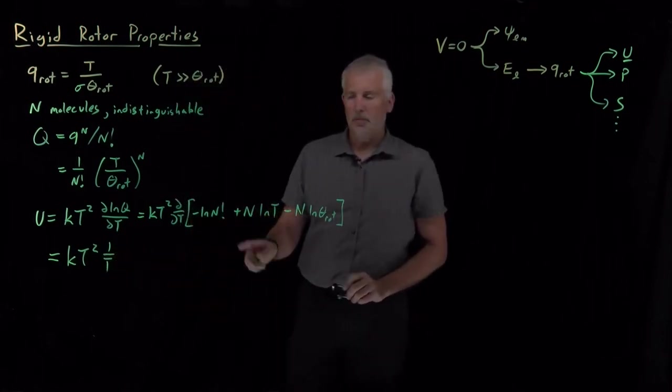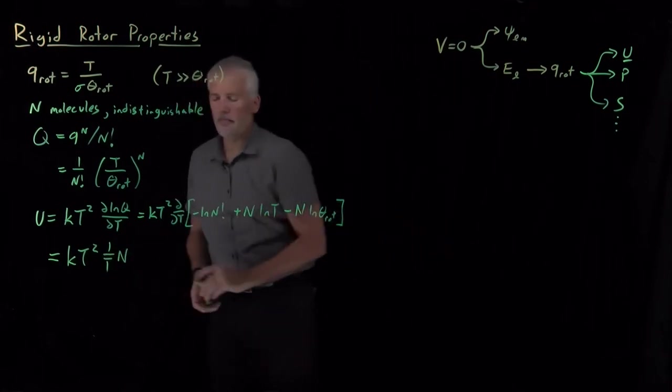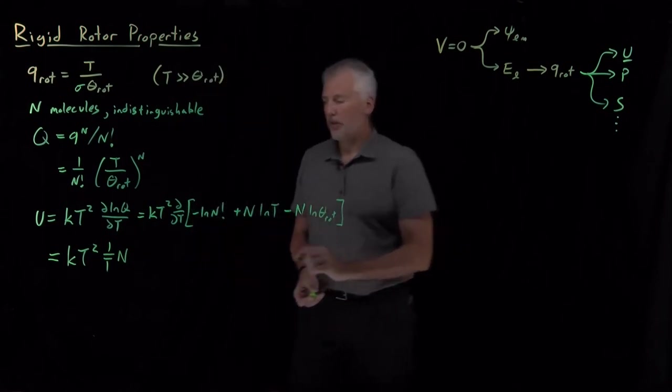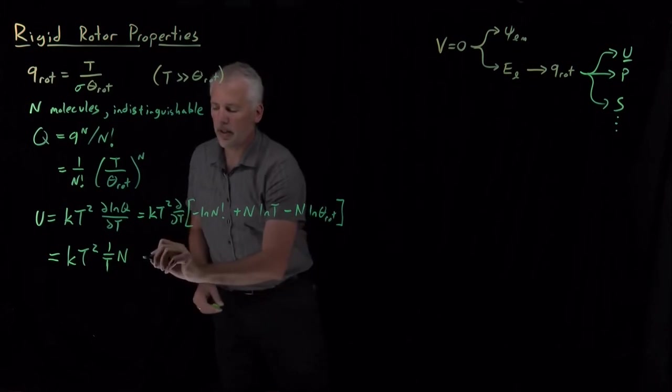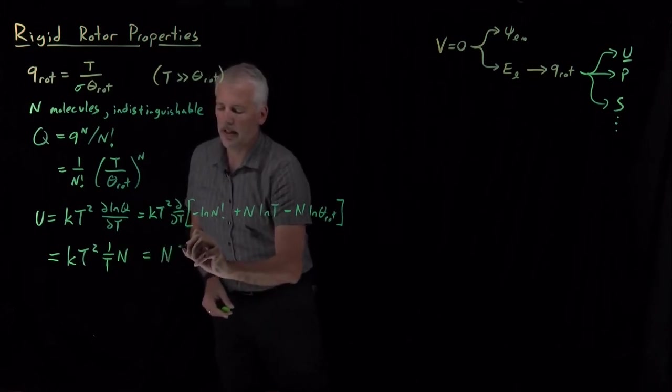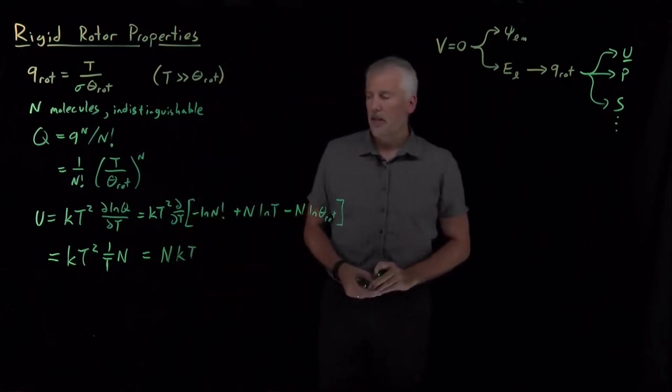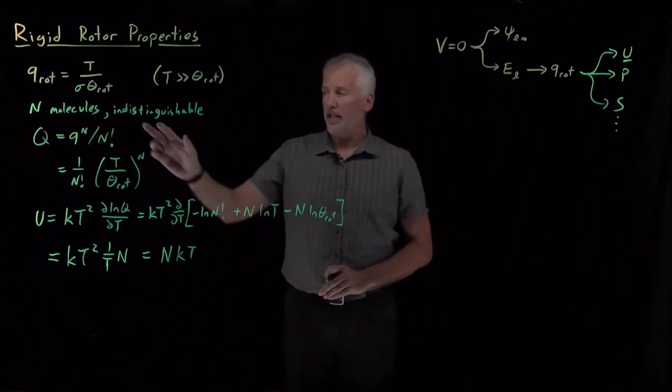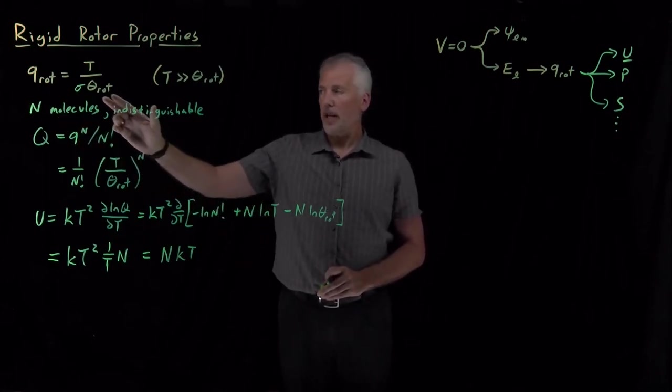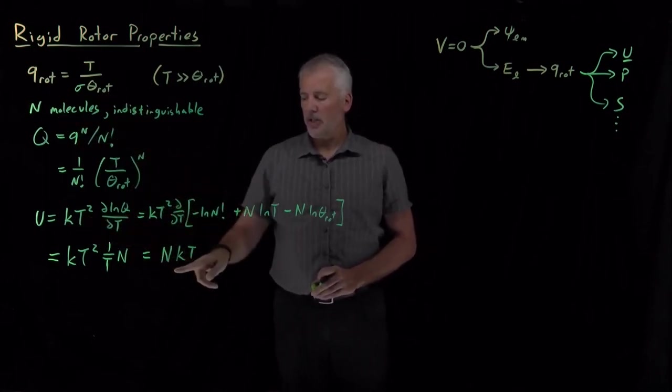And I've got an N multiplying that term that I need to include as well. So, this 1 over T cancels one of these factors in the T squared. And I'm left with, let me put the N out front, N times k times T. So, it turns out the internal energy for my box containing N identical and indistinguishable diatomic molecules, this energy is NkT.